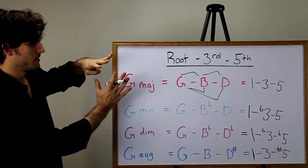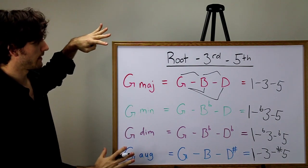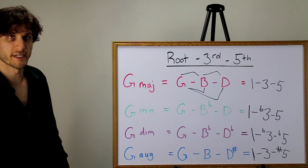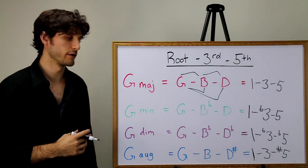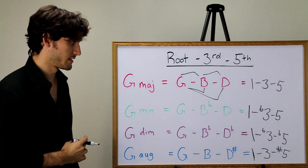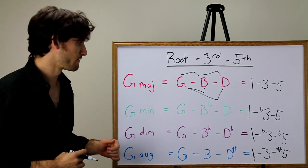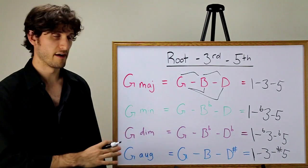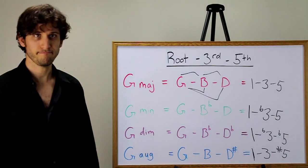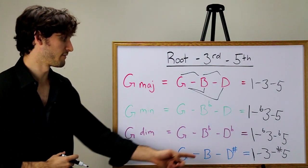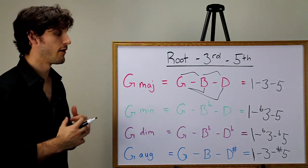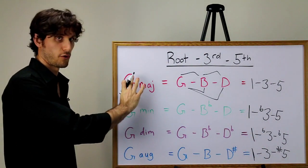So here we have it. This is the complete charted out root, third, fifth system for all four types of triads. Once again, it's very important to remember that the major chord is our point of reference in this system. In a major chord, the root, third, and fifth are simply written as one, three, five without qualifiers. The other triads are written with flats and sharps to represent how they deviate from the major chord, the foundation.